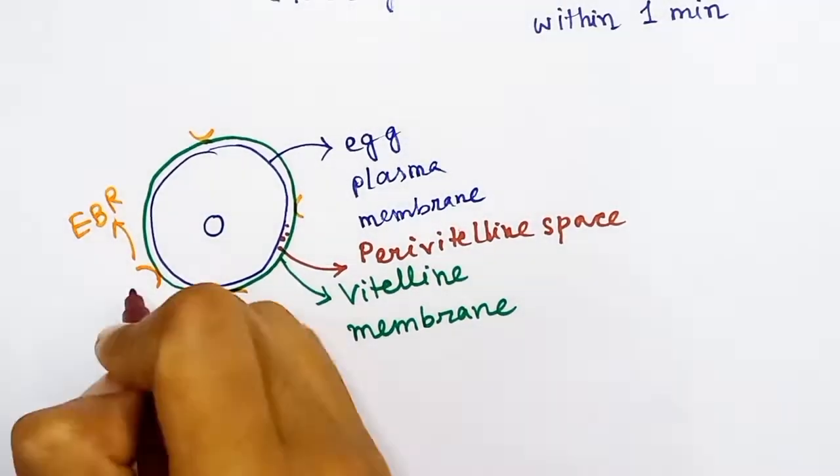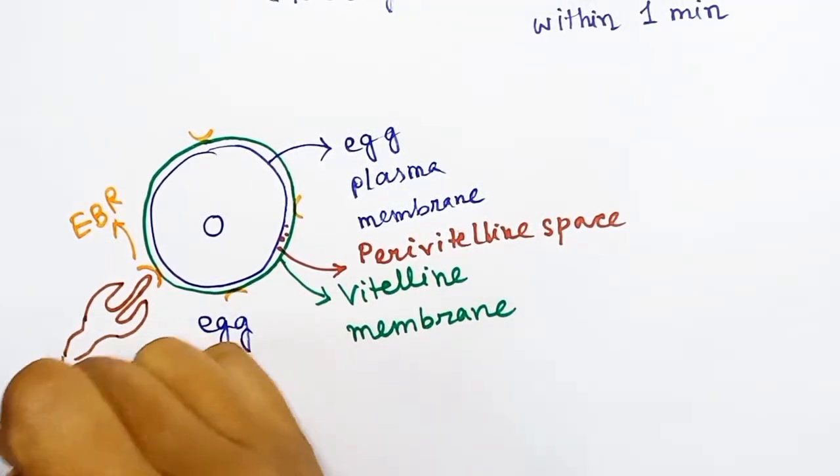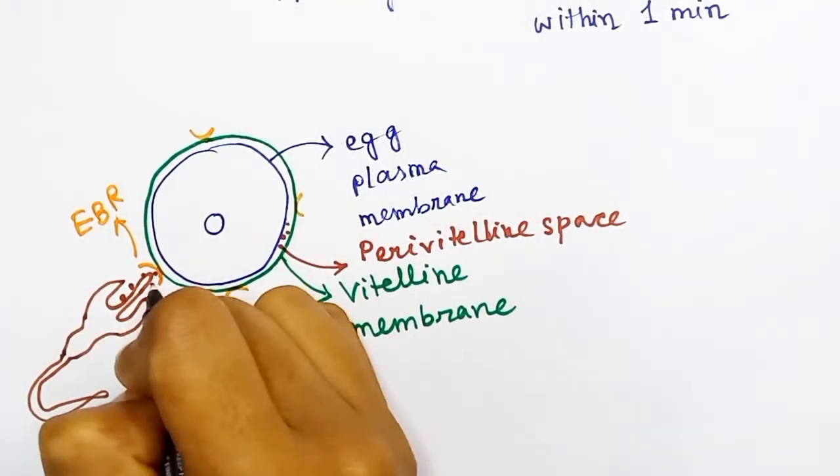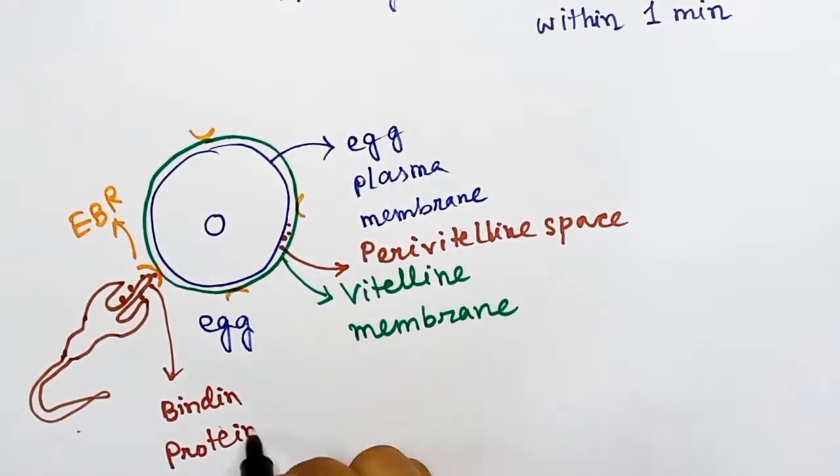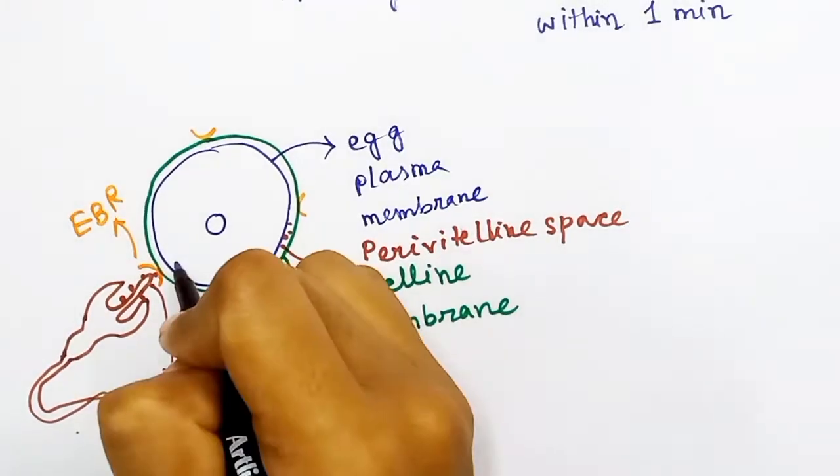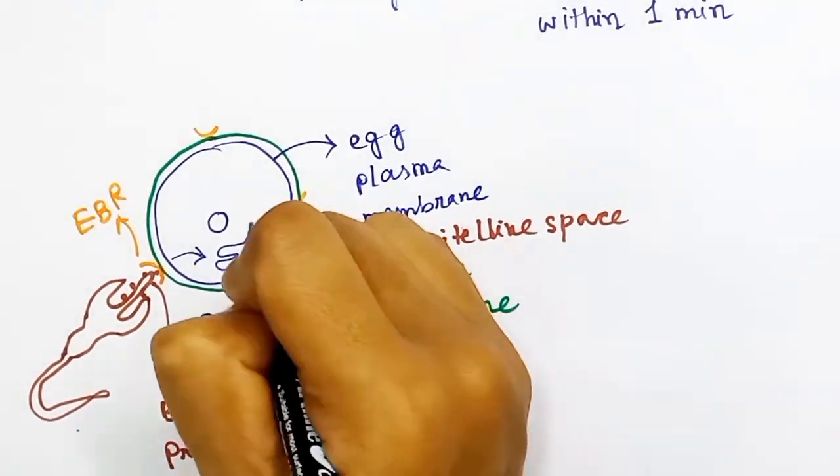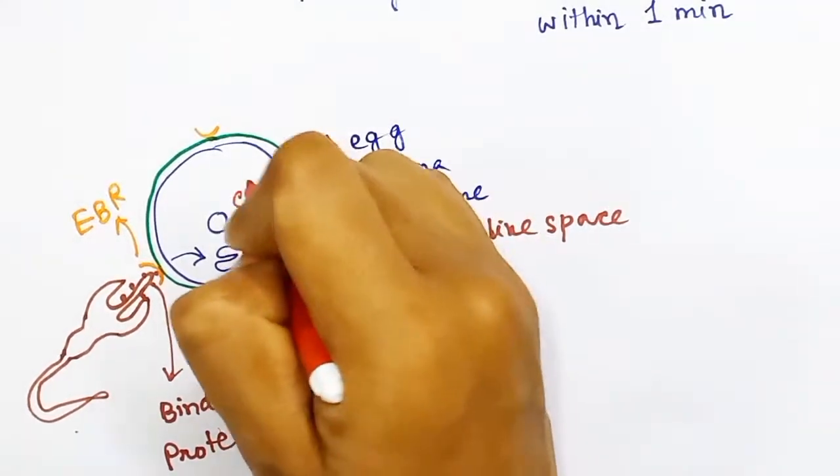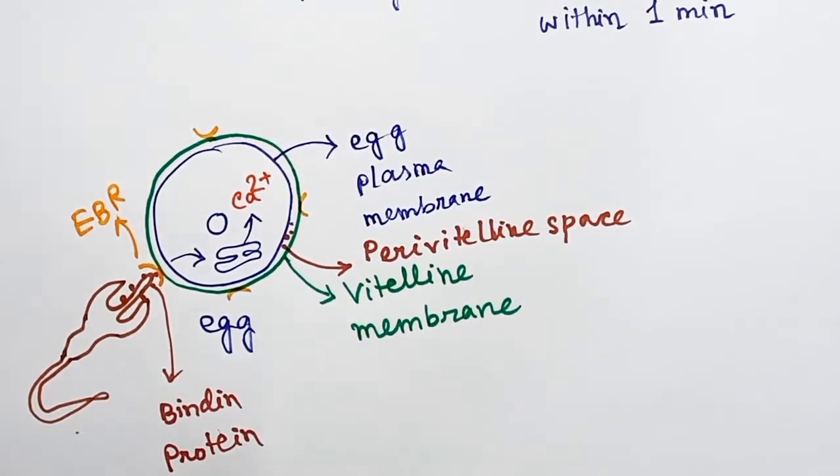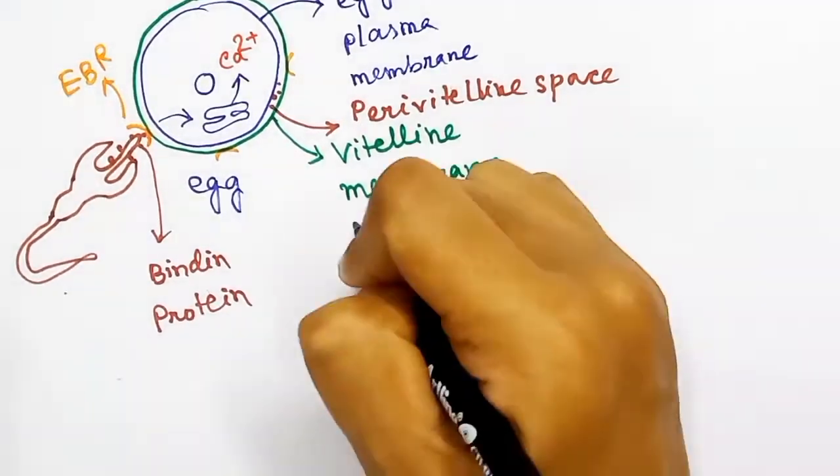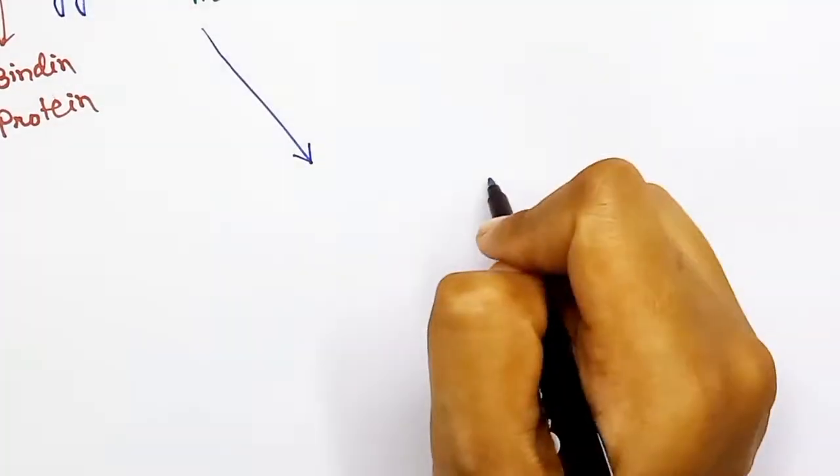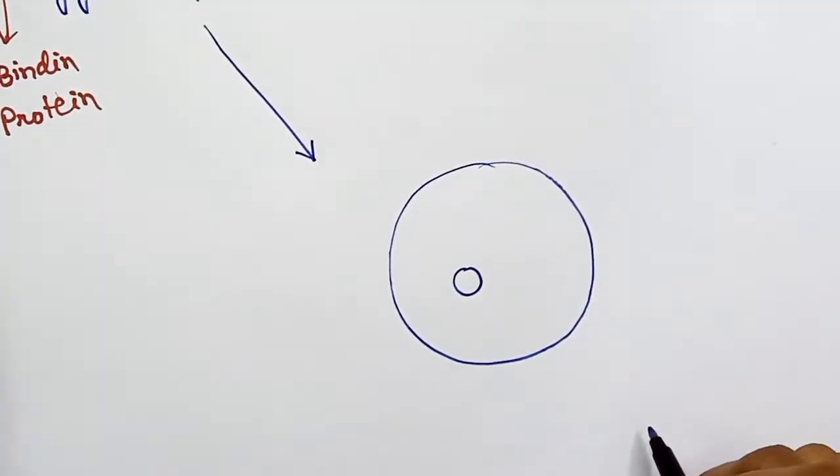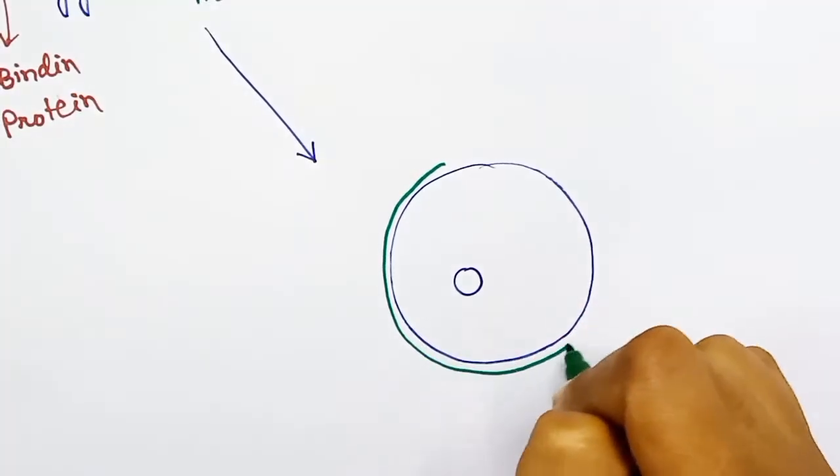This mechanism starts when the sperm binding protein interacts with the EBR receptor of the vitaline membrane of the egg. When this interaction occurs, the calcium channels in the endoplasmic reticulum of the ovum open. As a result, calcium comes out of the endoplasmic reticulum and increases the concentration of calcium in the cytoplasm of the ovum.